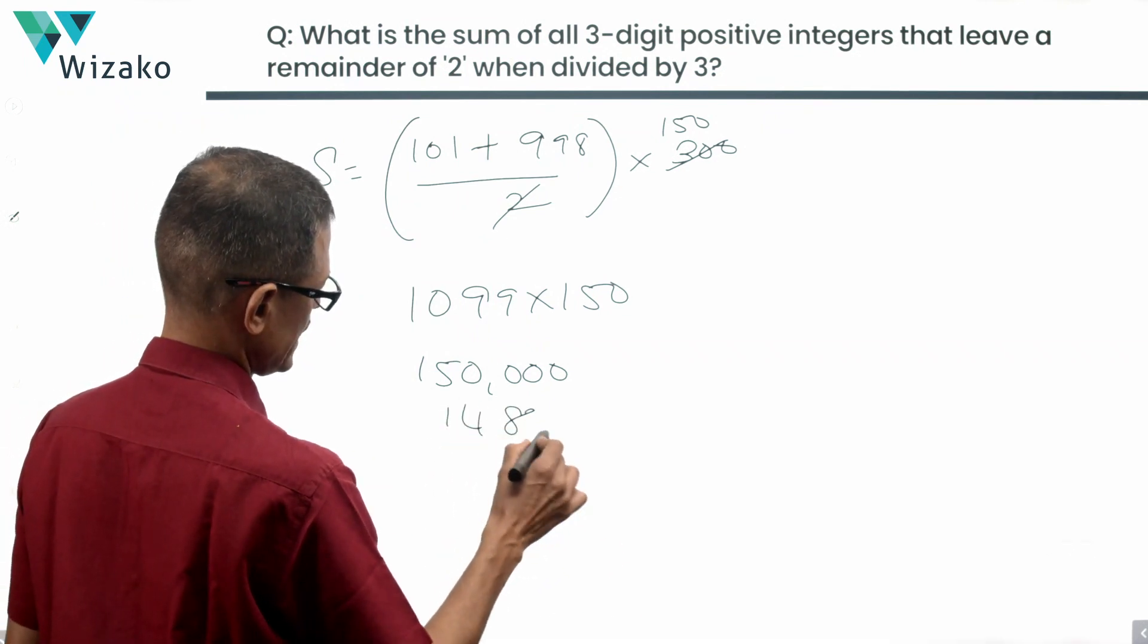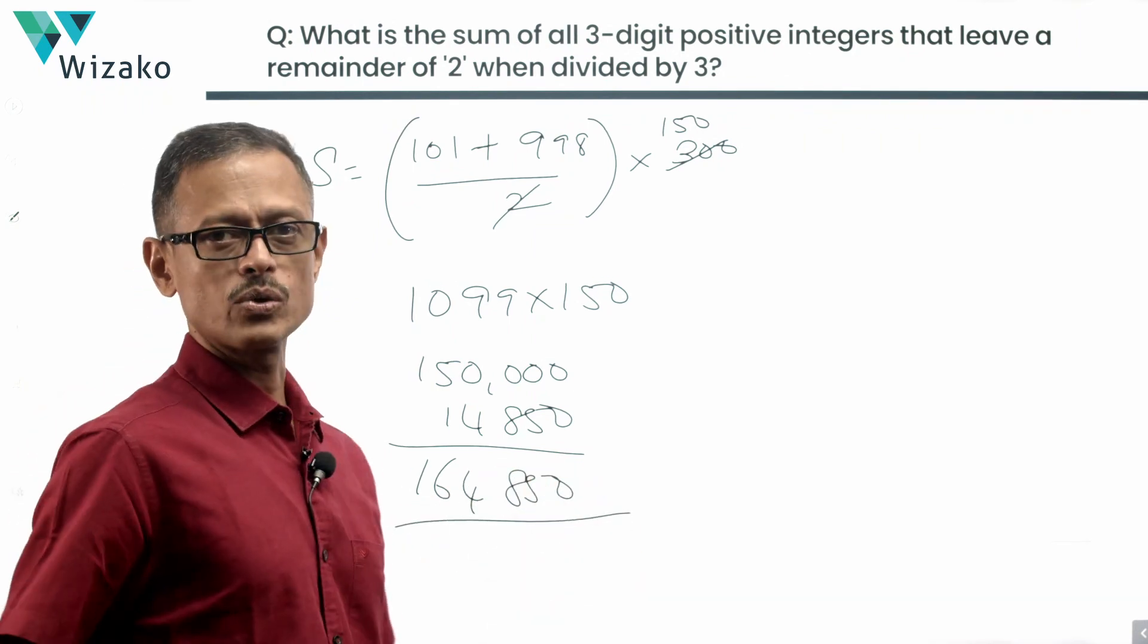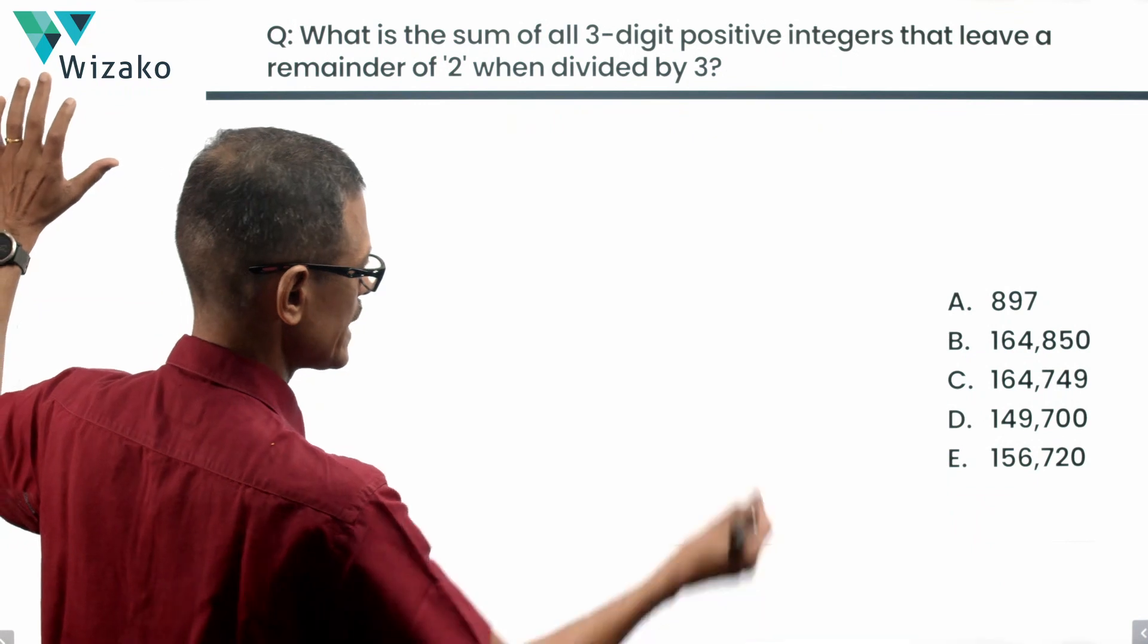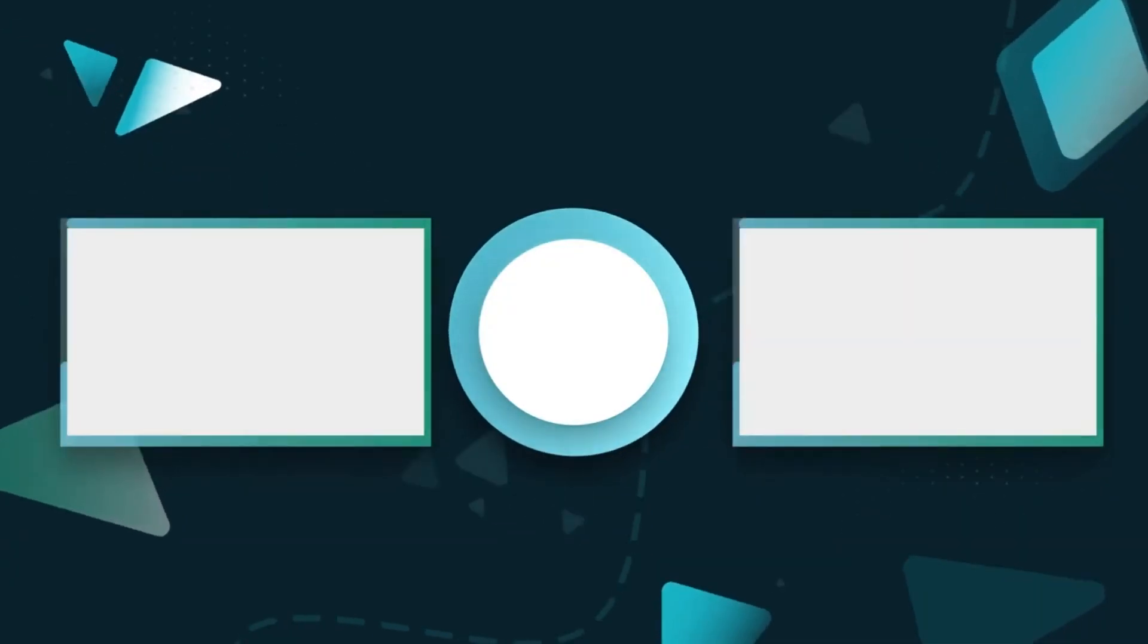It's one less than that, so it's 14,850. Add these two. 164,850 is the answer. Take a look at the answer options. 164,850. Choice B is the correct answer to the question.